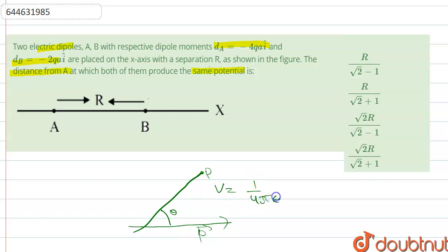p vector dot r-cap over r squared. R is the distance. We can simplify it as 1 over 4π epsilon naught times p cos theta over r squared. So this is our formula for potential at point P.